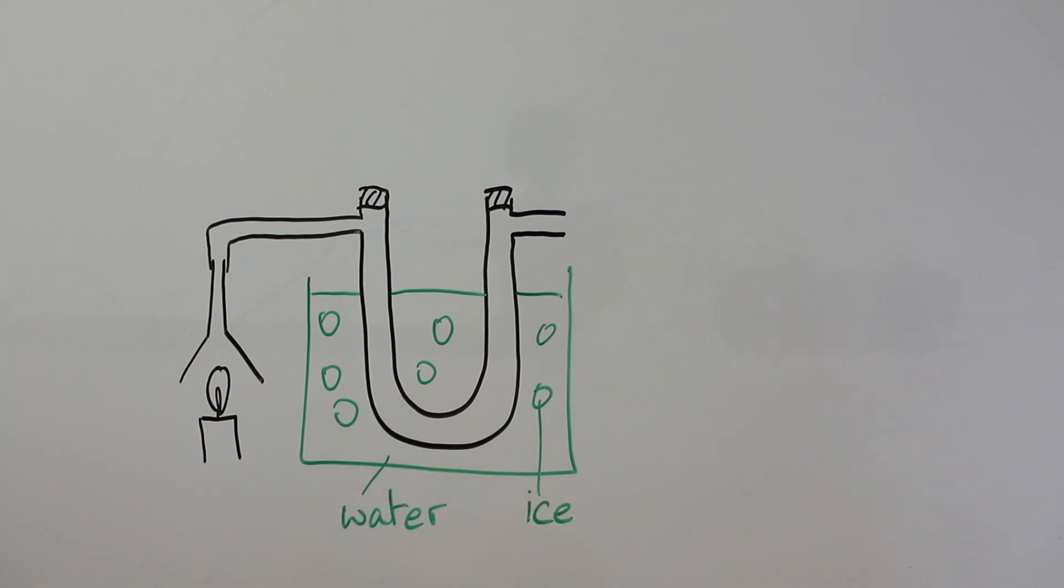That's going to make this really quite cold and in here we're going to place a piece of cobalt chloride paper. The cobalt chloride paper initially is blue and if any water condenses onto it then it will turn pink.